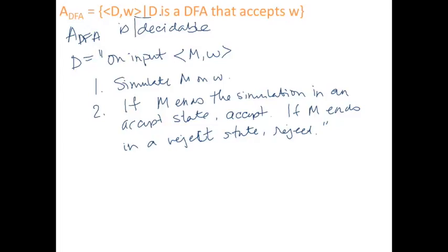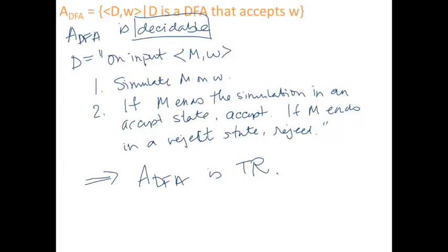Note that ADFA being decidable also implies that ADFA is Turing recognizable. How do I turn the above into a recognizer? It already is a recognizer, because whenever the string is in the language the machine accepts. Remember that with recognizers we don't have to handle what happens if the string is not in the language, but we do have to accept in a finite number of steps if the string is in the language. Every decider already does that, so every decider is already a recognizer.